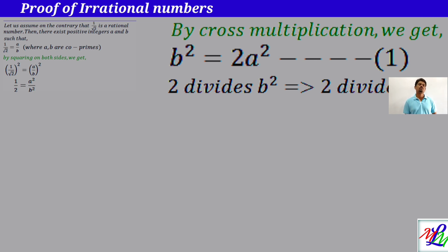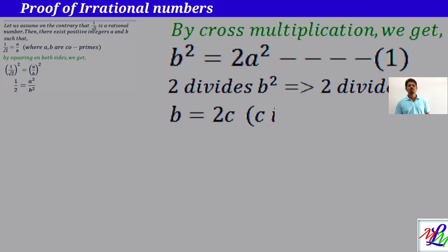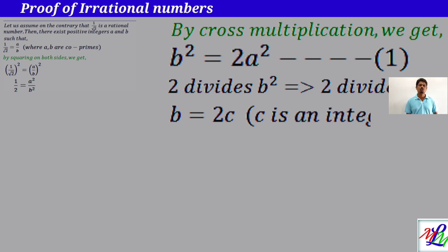Since 2 divides b, b is equal to 2 times some integer. Therefore we can write b is equal to 2c, where c is an integer.